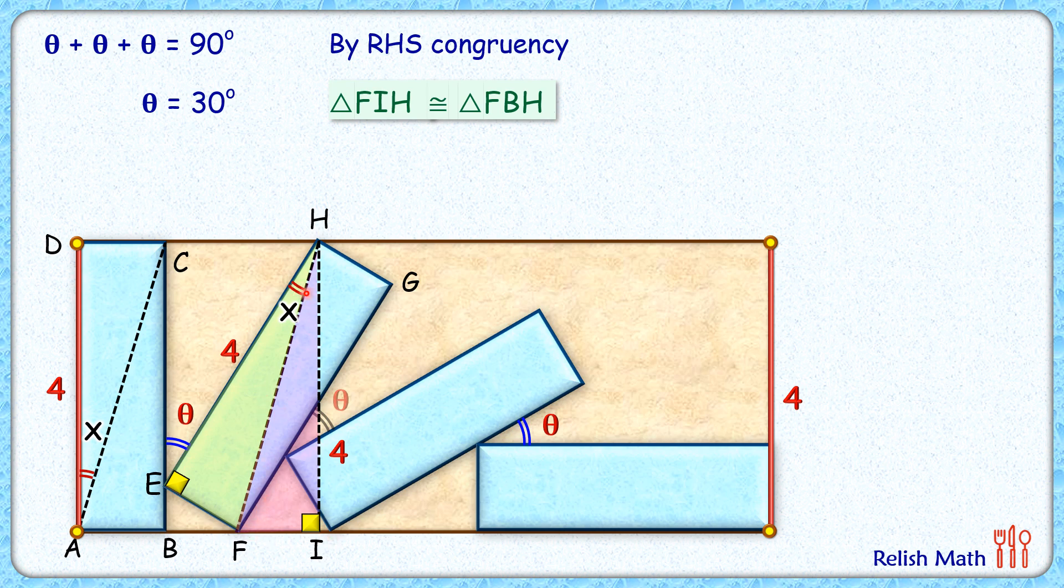We can say that angle IHF equals angle FHB, or this angle here is x degrees. If you see, BC length and HI length are parallel to each other, and HE is a transversal. This angle and this angle are alternate interior angles. Since alternate interior angles are equal, theta equals 2x.